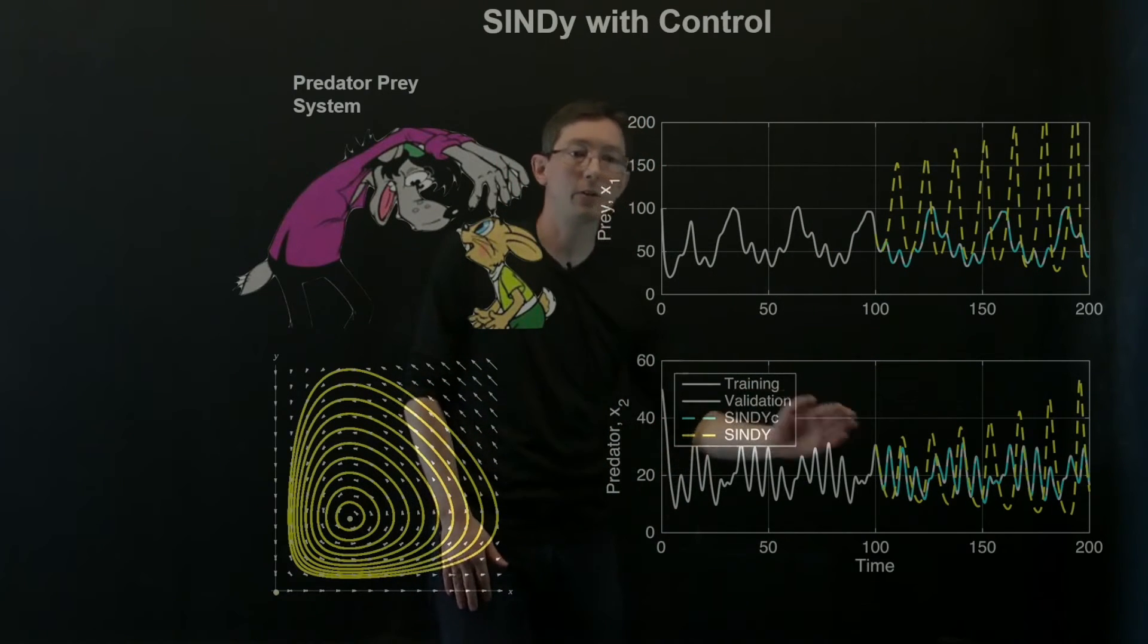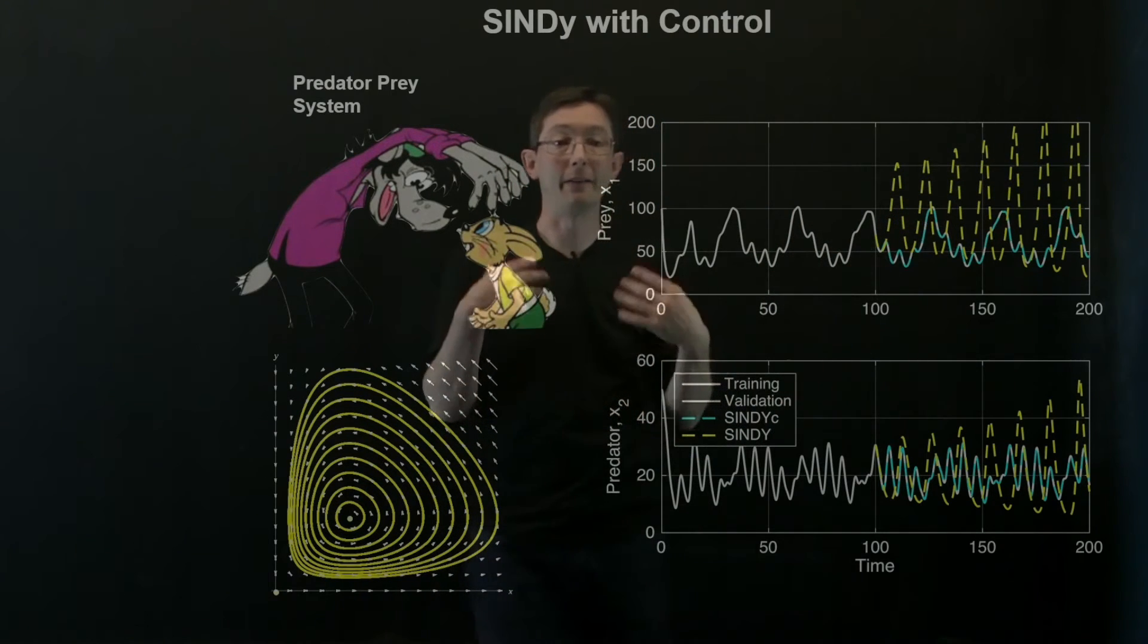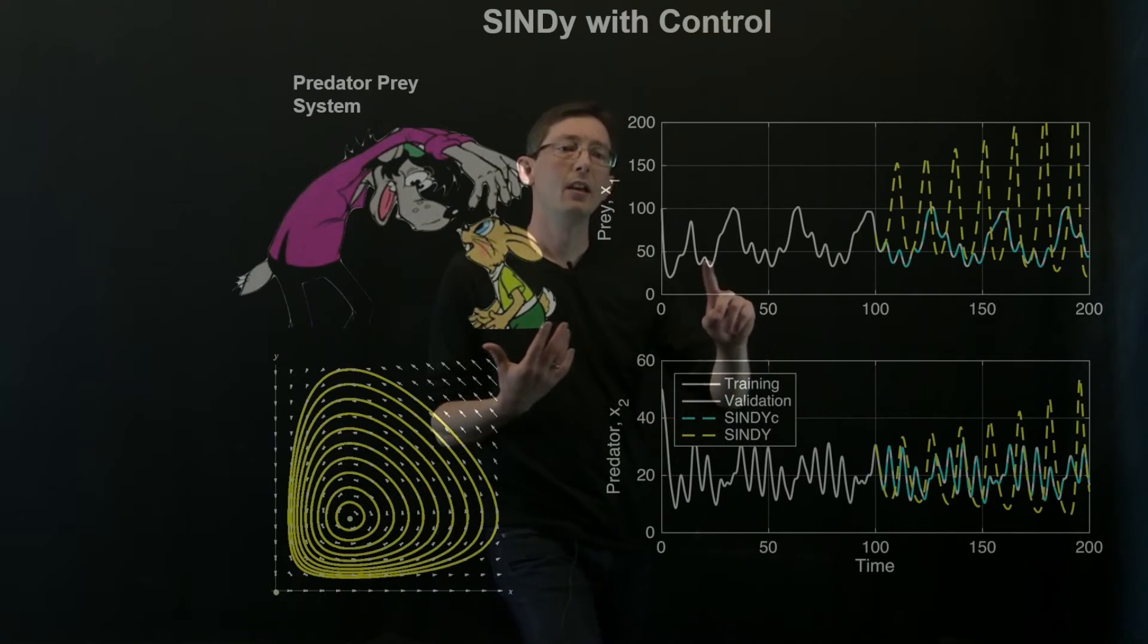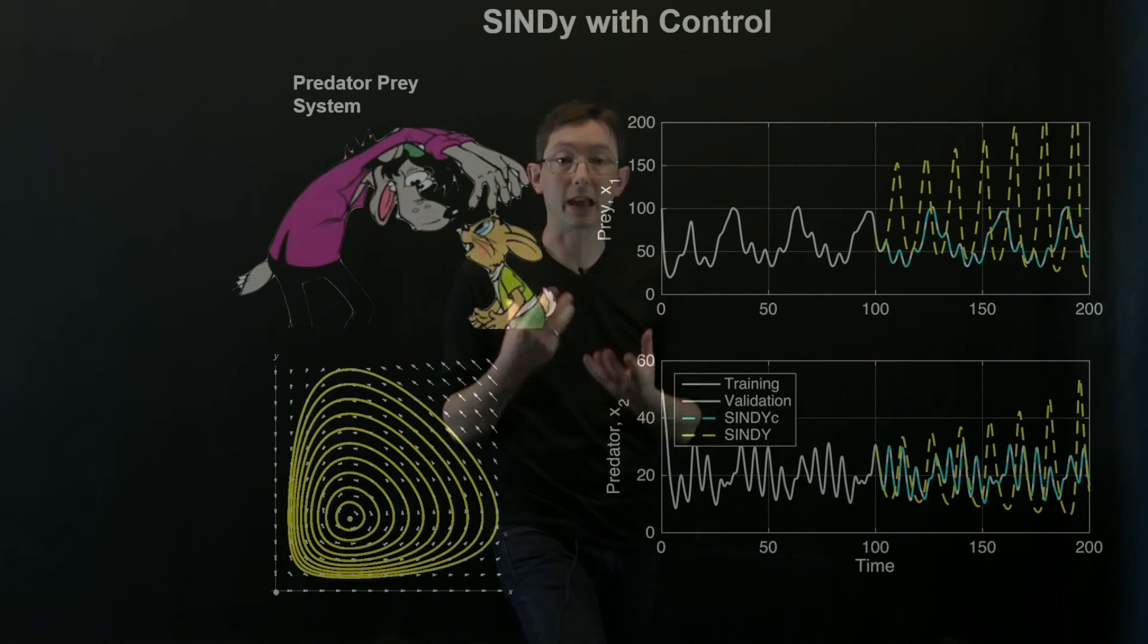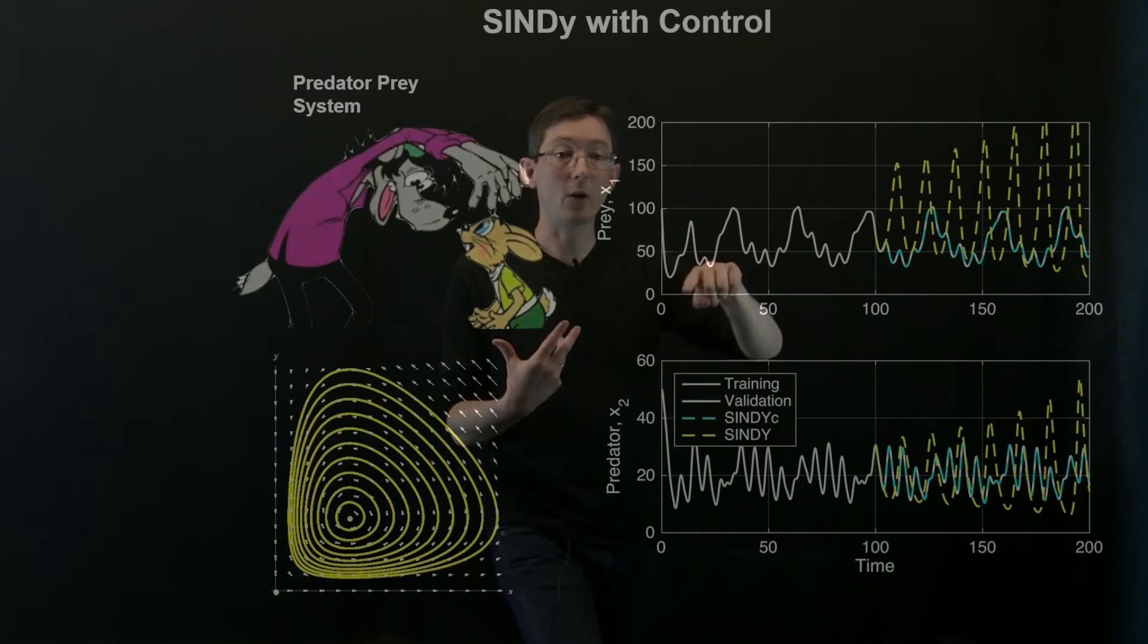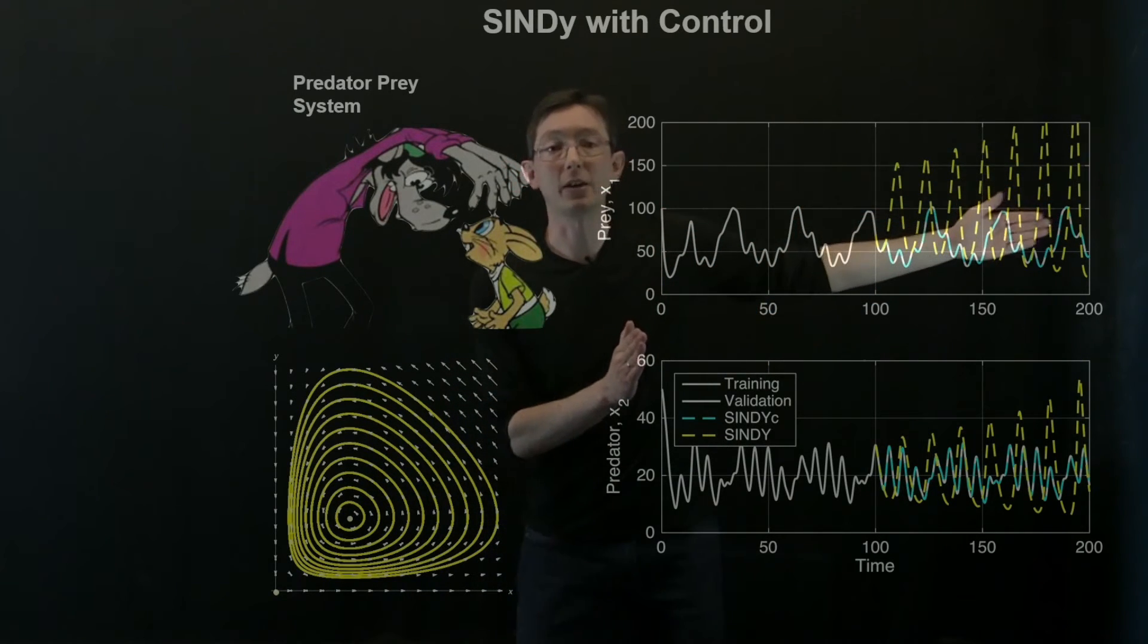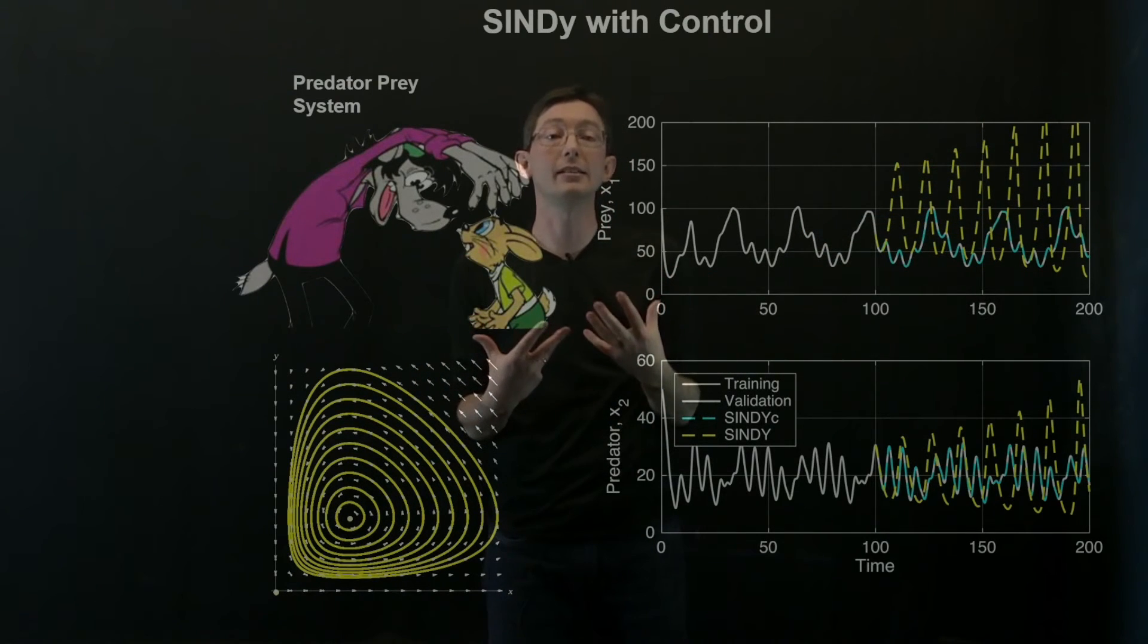So kind of zero to 100 is my training data, 100 to 200 is my validation data. And what you can essentially see is if I do naive SINDy, if I do regular SINDy but I don't take into account the fact that I'm actively controlling my system, then I can agree quite well in my training period but then when I switch my control input my SINDy model starts to diverge because it fundamentally doesn't capture the fact that there's this control variable u that's forcing my system.